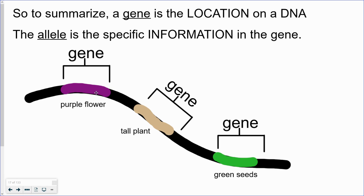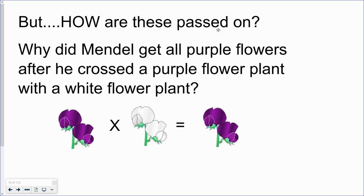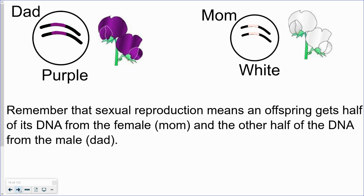But how do these get passed on? Why did Mendel get all purple flowers after he crossed a purple flower plant with a white flower plant?